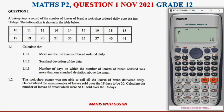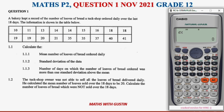Now they ask for the standard deviation. We do the same: Shift, Statistics, go to variance — option 4 — and the standard deviation is given by σx, which is option 3. Select option 3, press equals, and our standard deviation is 10.17. Please note that down: 10.17.